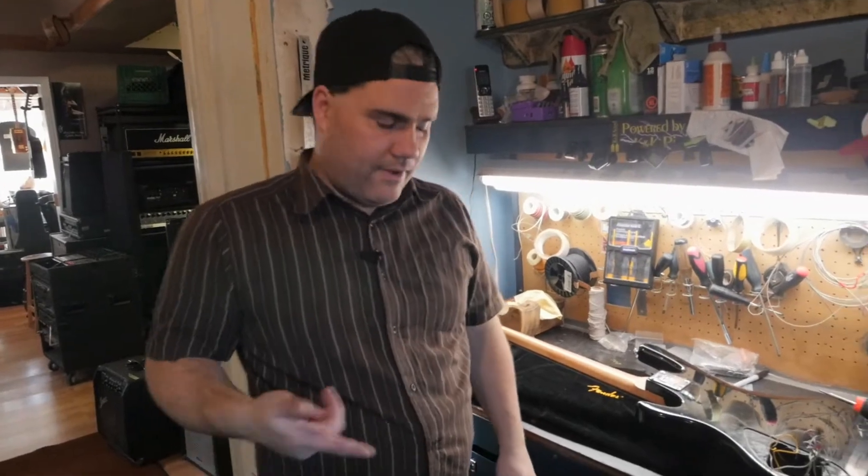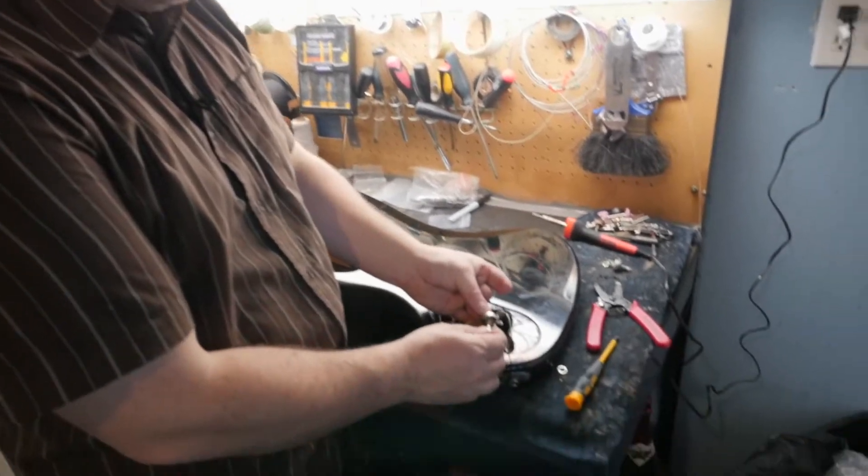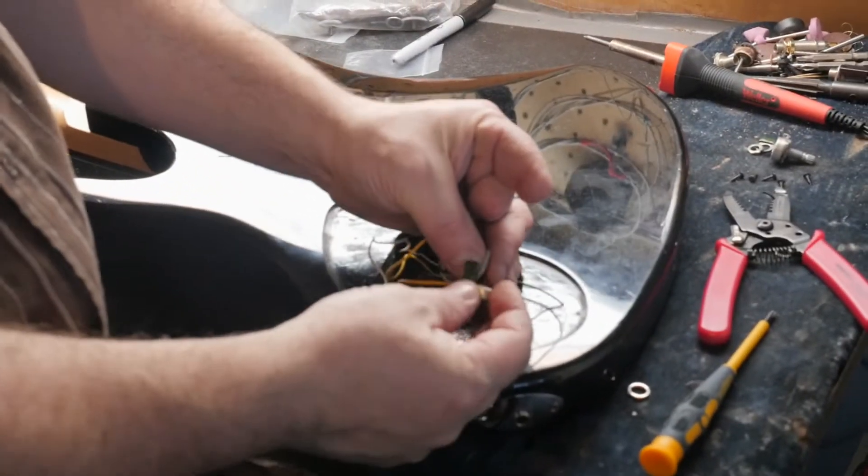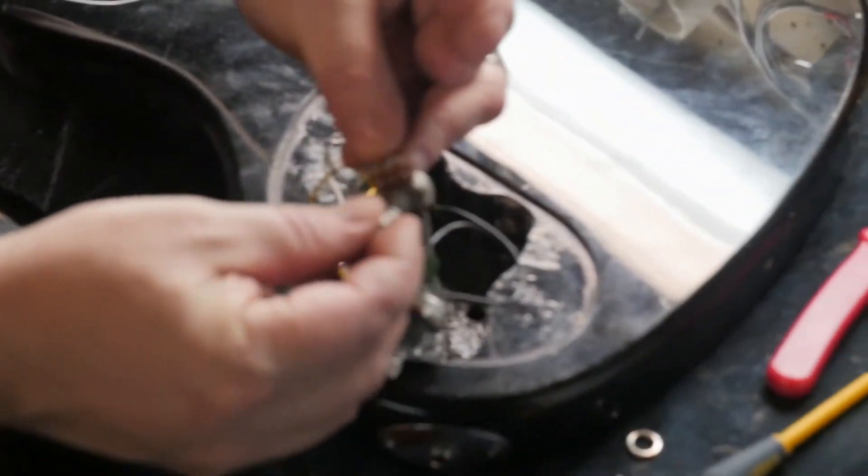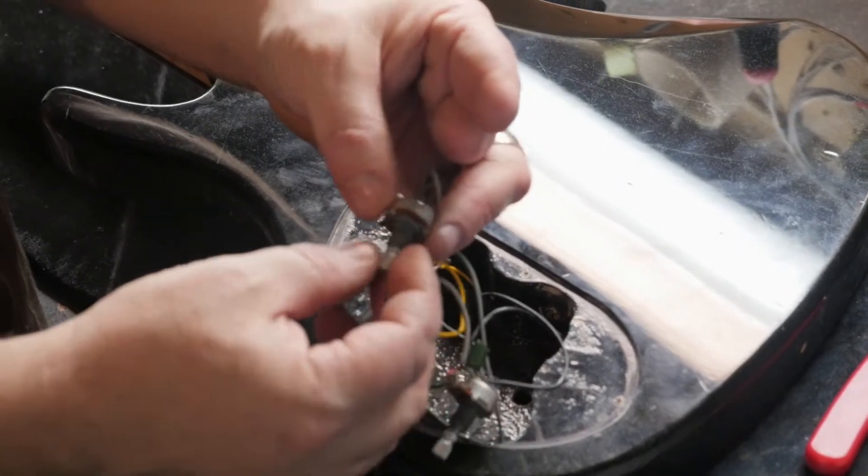What we found out was the tone pot itself is completely broken. The potentiometer here is just toast. We're going to replace that in its entirety. That's going to be a few solders. The volume pot was just twisted up, but it's going to work fine. We'll just reset it and tighten everything back up.